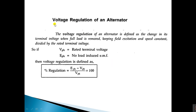Now, the voltage regulation of an alternator is defined as the change in its terminal voltage when full load is removed, keeping field excitation and speed constant, divided by the rated terminal voltage. Here V_phase is the rated terminal voltage and E_phase is the no-load induced EMF. The percentage regulation = (E_phase − V_phase) / V_phase × 100.